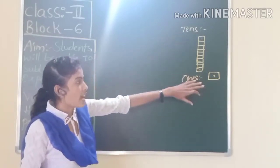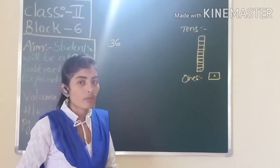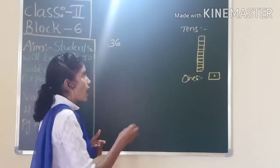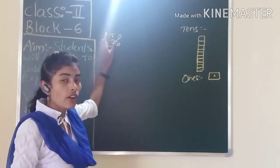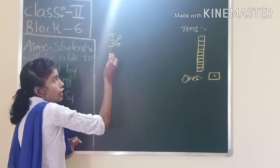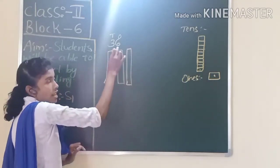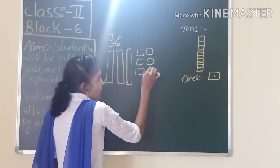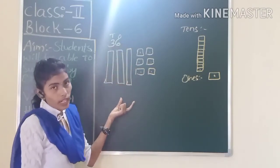So we will use a tens tower for tens and a ones cube for ones. If I ask you to represent 36 using place value blocks, how will we represent it? First we have to write place values — ones and tens. In 36 we have two place values. We have to draw three tens towers because in the tens place we have three, and six ones cubes — one, two, three, four, five, six. So this represents 36.